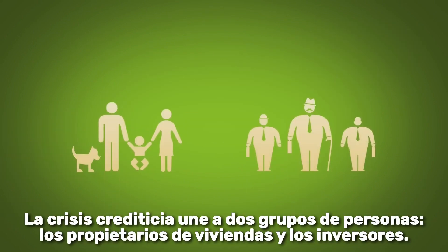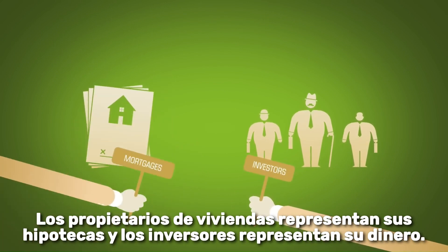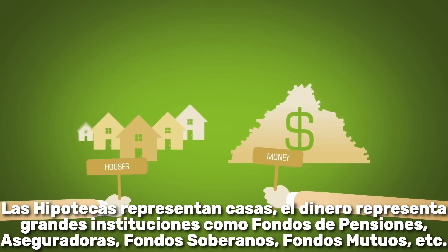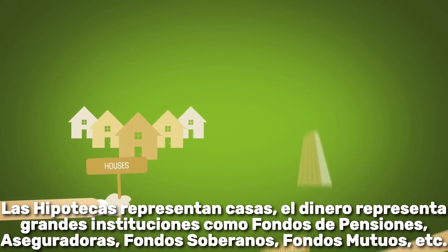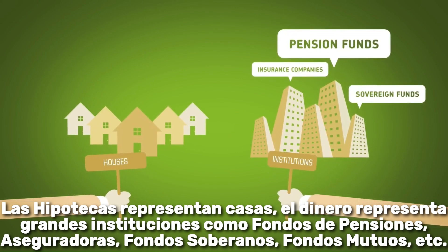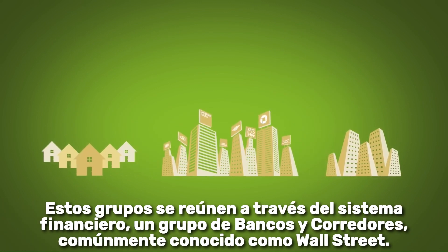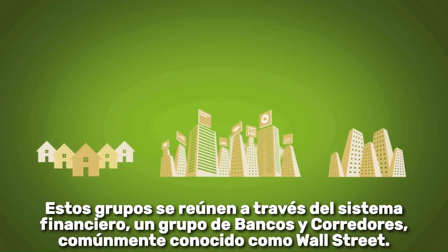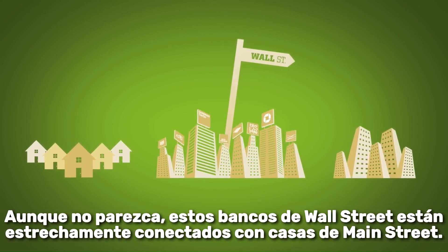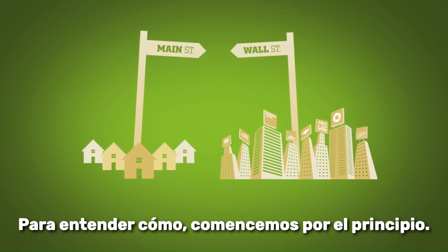The credit crisis brings two groups of people together: homeowners and investors. Homeowners represent their mortgages and investors represent their money. These mortgages represent houses, and this money represents large institutions like pension funds, insurance companies, sovereign funds, mutual funds, etc. These groups are brought together through the financial system — a bunch of banks and brokers commonly known as Wall Street. While it may not seem like it, these banks on Wall Street are closely connected to these houses on Main Street.